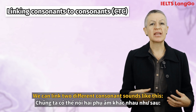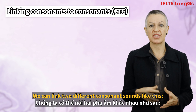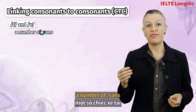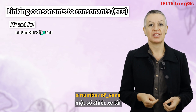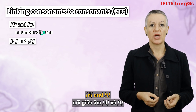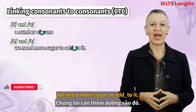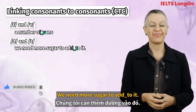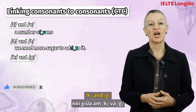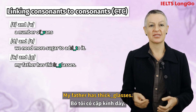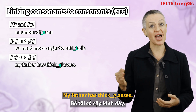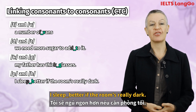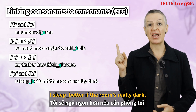We can also link two different consonant sounds. F and V: a number of vans. D and T: we need more sugar to add to it. C and G: my father has thick glasses. P and B: I sleep better if the room's really dark.